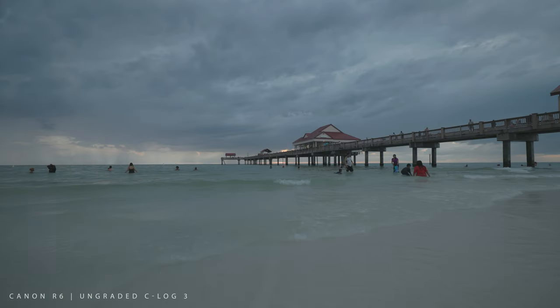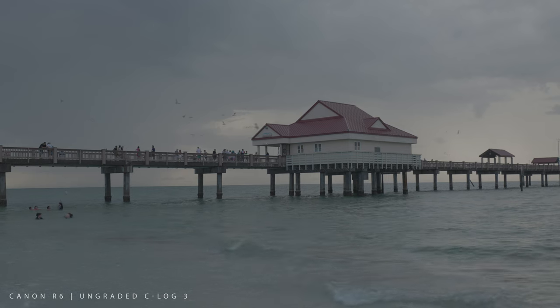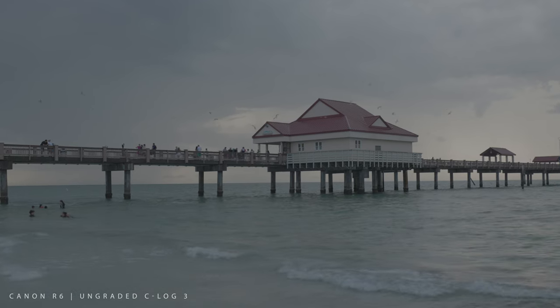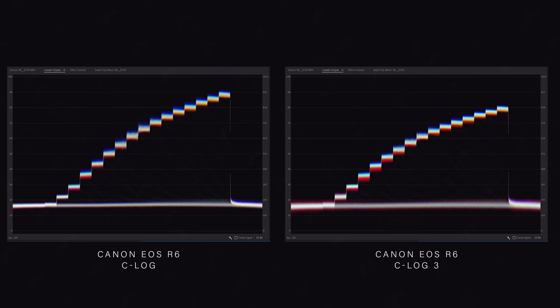Then you have C-Log 3, which is kind of the Goldilocks Log profile — a mixture of C-Log and C-Log 2. It's not as aggressive as C-Log 2, but is more of a Log profile than C-Log. C-Log 3 is typically the profile I prefer to use. The shadows are lifted a little more and the highlights are clamped a little more. On the Canon R6, I've noticed about a stop more of dynamic range between C-Log 1 and C-Log 3, so if you want the most dynamic range, C-Log 3 is the profile for you.